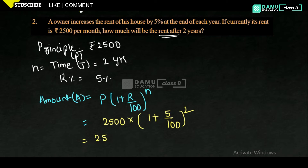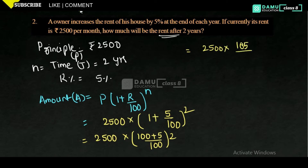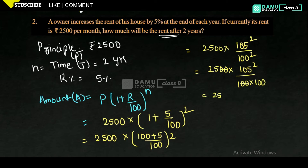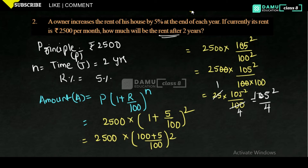So we have 2500 into 1 plus 5 by 100 whole squared. Taking LCM: 100 plus 5 by 100, whole squared, that is 2500 into 105 by 100 whole squared. Simplifying: 2500 into 105 squared by 10000. Cancelling the zeros, we get 25 into 105 squared by 100, then cancelling 25 gives 105 squared by 4.